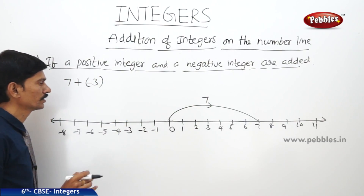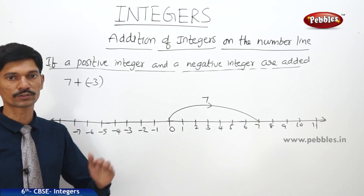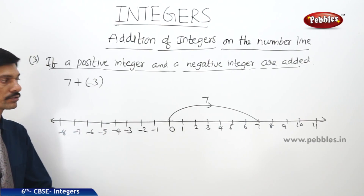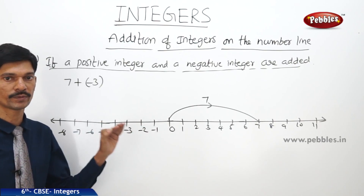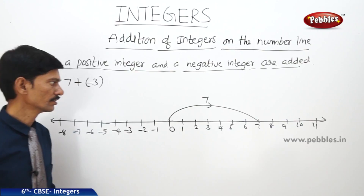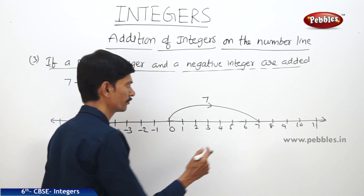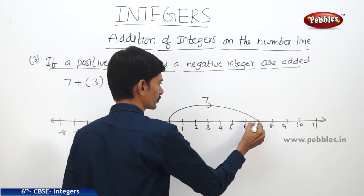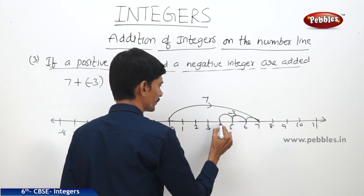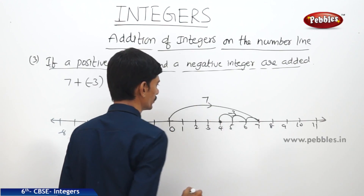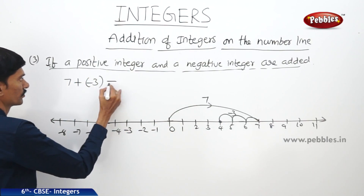Then minus 3, the negative integer is added. So when the negative integer is given, we have to move to the left. The positive integer means we move to the right, and the negative integer means we move to the left. So we have to move 3 steps to the left of 7 — 1, 2, 3 — so then we are at 4. Therefore, 7 + (−3) = 4.